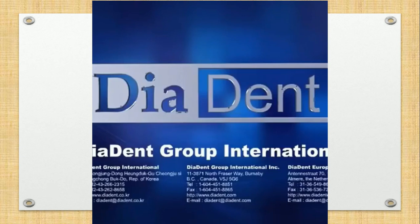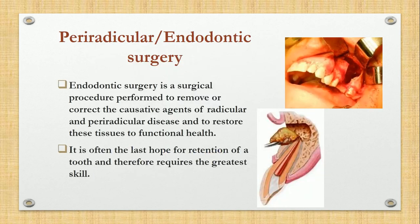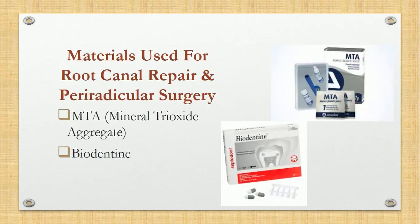This was the thermoplasticized obturation technique. Next we will discuss periradicular or endodontic surgery. Endodontic surgery is a surgical procedure performed to remove or correct the causative agents of radicular or periradicular disease and to restore these tissues to functional health. It is often the last hope for retention of a tooth and therefore requires the greatest skill. Materials used for root repair and periradicular surgery are MTA (mineral trioxide aggregate) and biodentine.